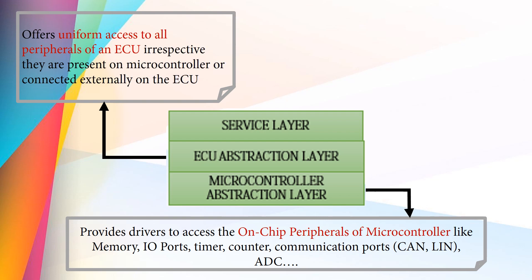Let me give you an example. Let's say we have two CAN channels — one is provided inbuilt by the microcontroller, and the other one is connected externally via an external CAN controller. Due to the ECU abstraction layer implementation, accessing any of these CAN channels will not have any difference.